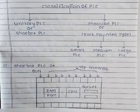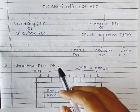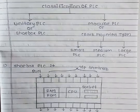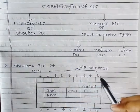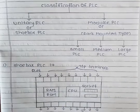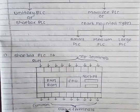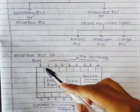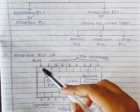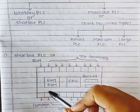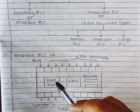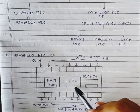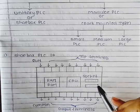First we see the shoebox PLC. This is the diagram for shoebox PLCs. These are the input terminals and these are the output terminals. These terminals are common and this is for run. In that shoebox PLC, RAM, ROM, CPU, and sockets will be there.